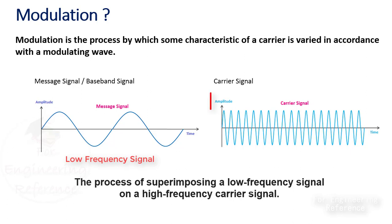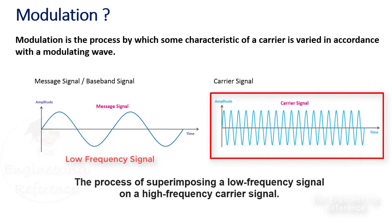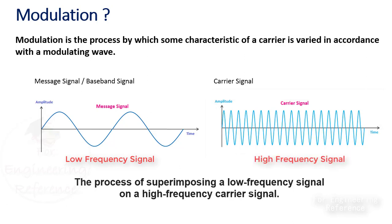The other signal involved in this is a high-frequency sinusoidal wave. This signal is called the carrier signal. The frequency of the carrier signal is almost always higher than that of the baseband signal. The amplitude of the baseband signal is transferred to the high-frequency carrier.